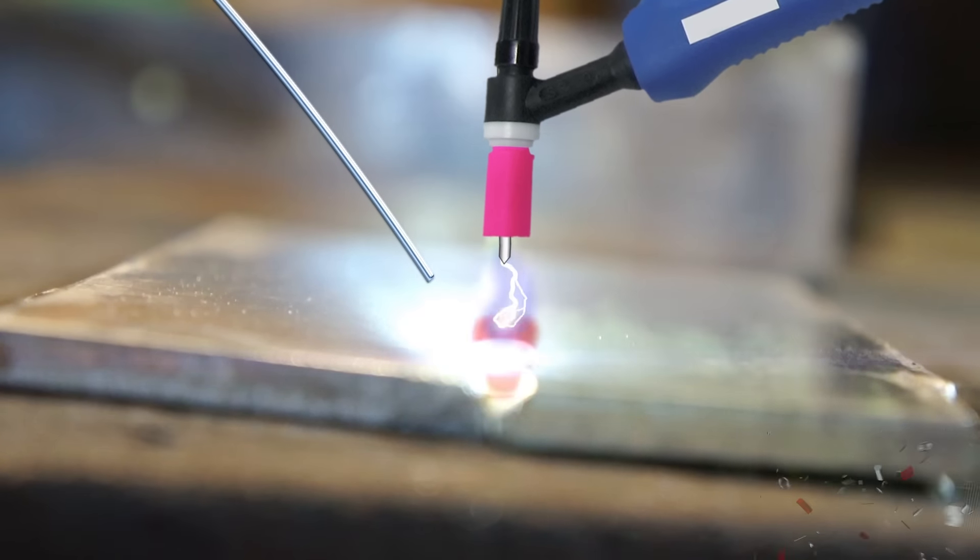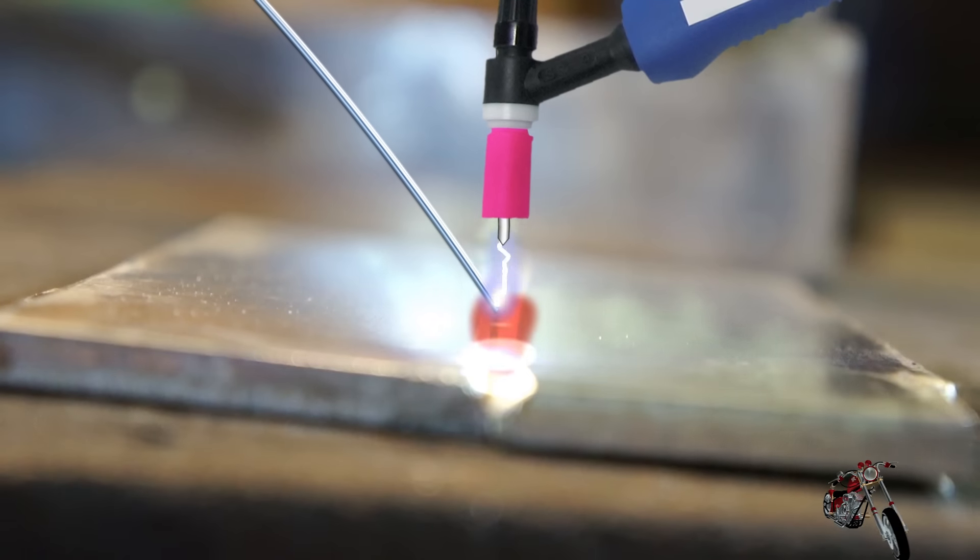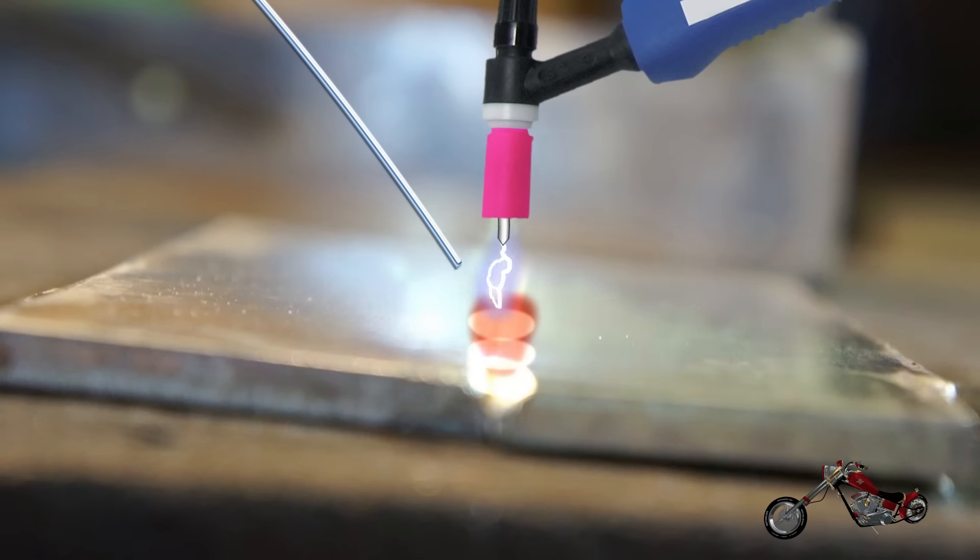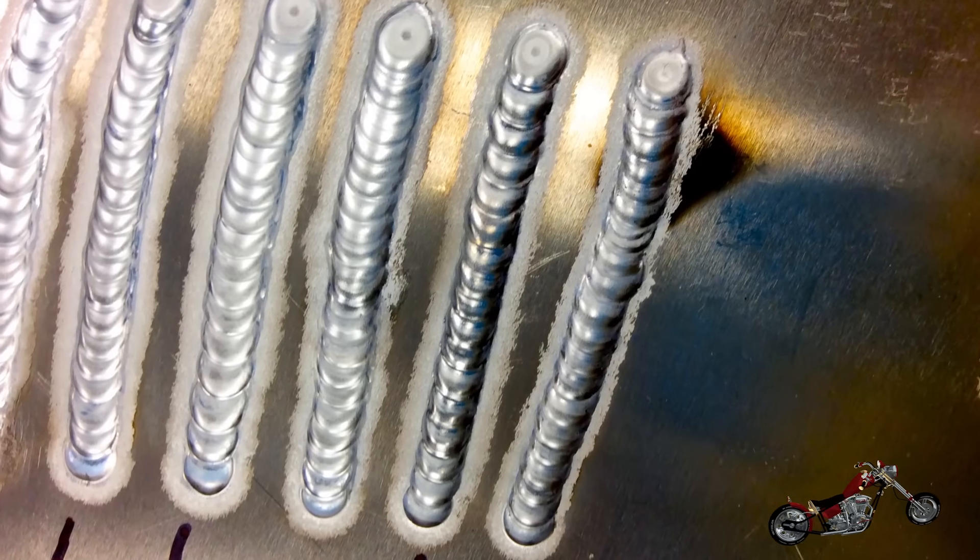You do need to get into the right rhythm though. You add the filler and then you spread it with the torch. If you get it right you'll get the sought after stacked coin look, typical of this welding technique.